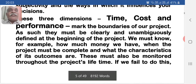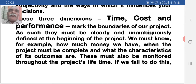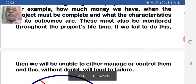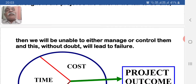These three dimensions — time, cost, and performance — mark the boundary of our project. As such, they must be clearly and unambiguously defined at the beginning of the project. We must know, for example, how much money we have, when the project must be complete, and what the characteristics of its outcomes are. These must also be monitored throughout the project's lifetime. If we fail to do this, we will be unable to either manage or control them, and this without doubt will lead to failure.